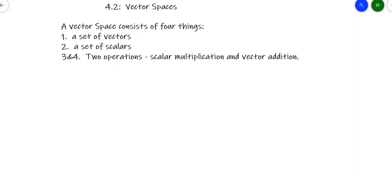Now we start getting into the theory of linear algebra and the concept of vector spaces. A vector space consists of four things: a set of vectors, a set of scalars, and two operations — scalar multiplication, meaning a number times a vector, and vector addition, meaning adding two vectors together. We're talking about things like matrices and functions, so a set of vectors could be a matrix or a function. We're creating spaces where a set of rules apply.